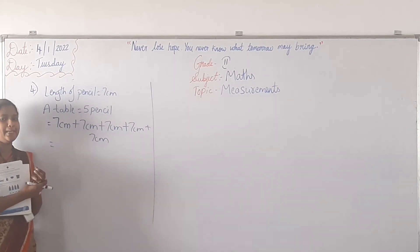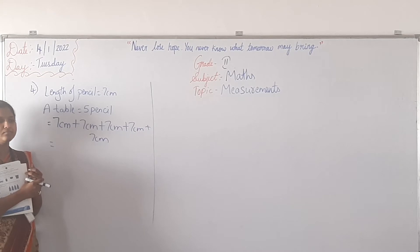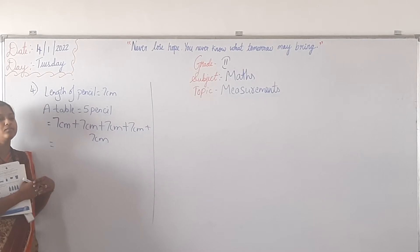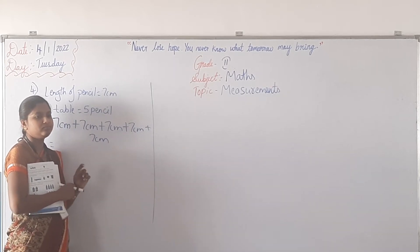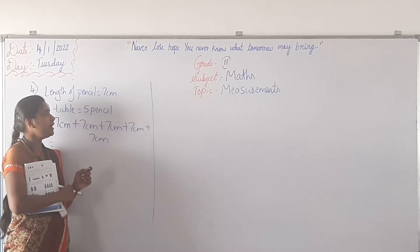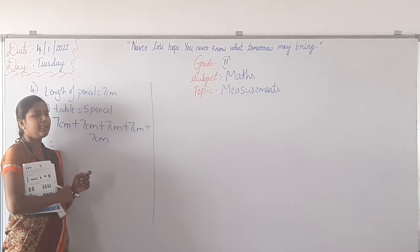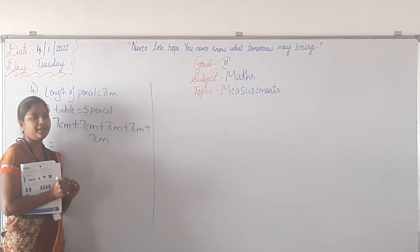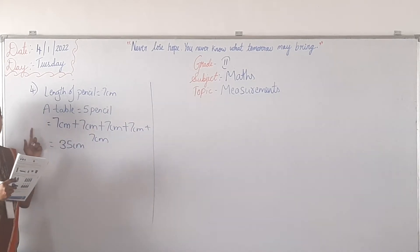What is 7 plus 7? 7 plus 7 is 14. Then 14 plus 7 is 21. Then 21 plus 7 is 28. Then 28 plus 7 is 35. So 35 cm is the length of the table. This is how we do it.